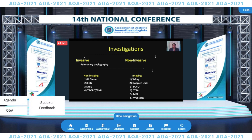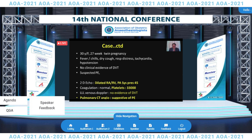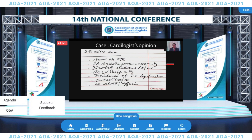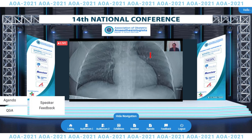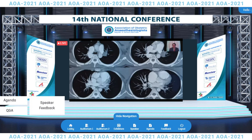The case continues: ECHO was done and showed dilated right atrium and right ventricle, a rise in pulmonary artery systolic pressure, and right ventricular dysfunction. Coagulation was normal but platelets were on the lower side at 33,000. Lower limb Doppler showed no evidence of deep venous thrombosis, and pulmonary CT angiography was highly suggestive of pulmonary embolism. There was decreased perfusion on the left side and the CTPA confirmed thromboembolism on the left side, with a wedge-shaped non-enhancing hypodensity region in the posterior segment of the right lower lobe as well.